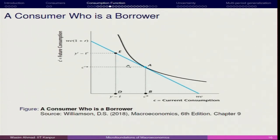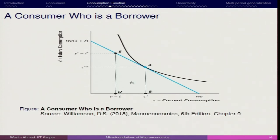Now we have a consumer who is a borrower. Here the endowment point is E, with income Y′−T* and current consumption C*. He is consuming more than his income — for example, income of 100 rupees but consuming 200 rupees. The extra 100 rupees is being borrowed. At point A, we infer that the consumer is a borrower: he borrows in the current period and has to pay back in the future period. This is the borrowing period, and the future is the payback period.